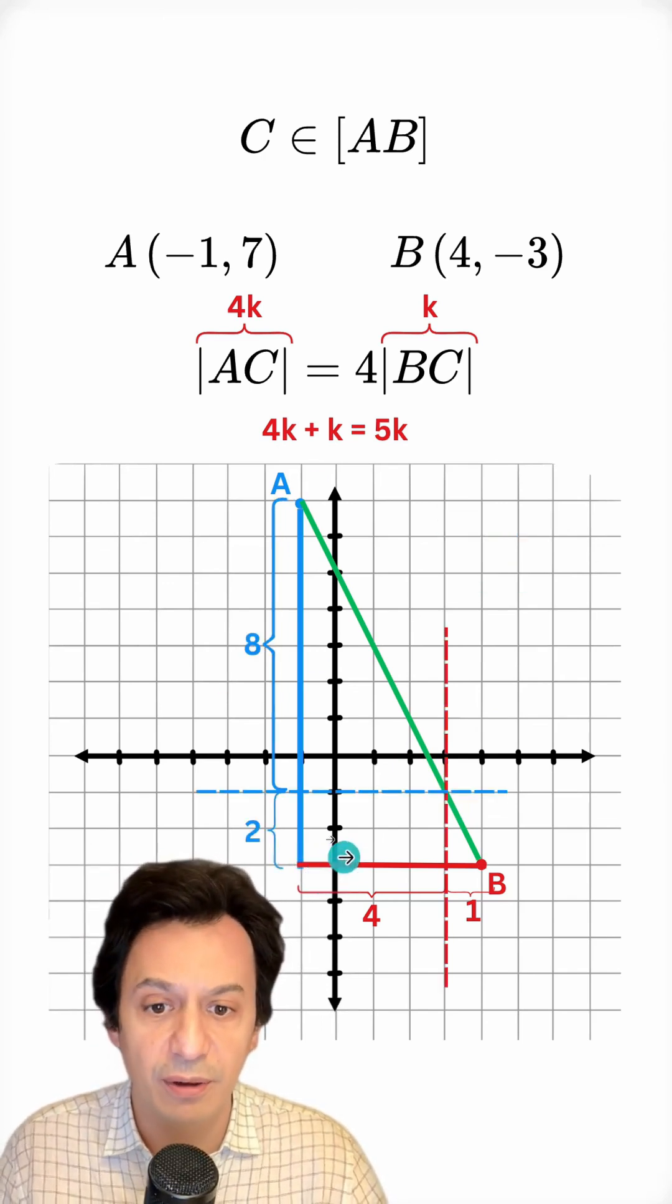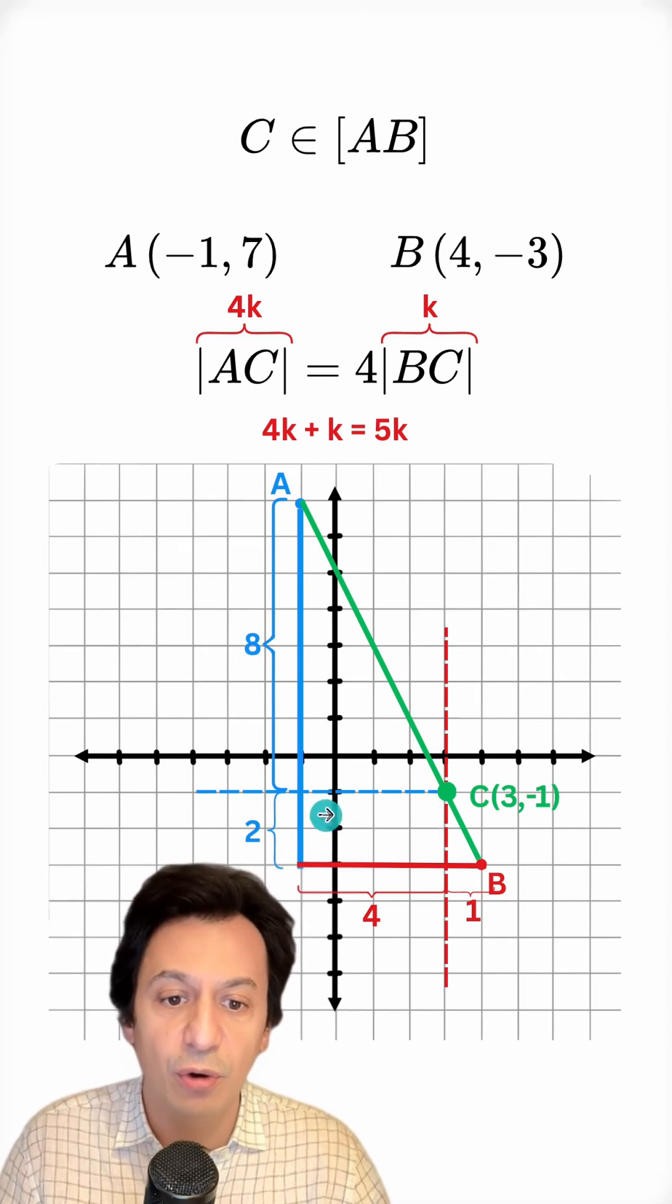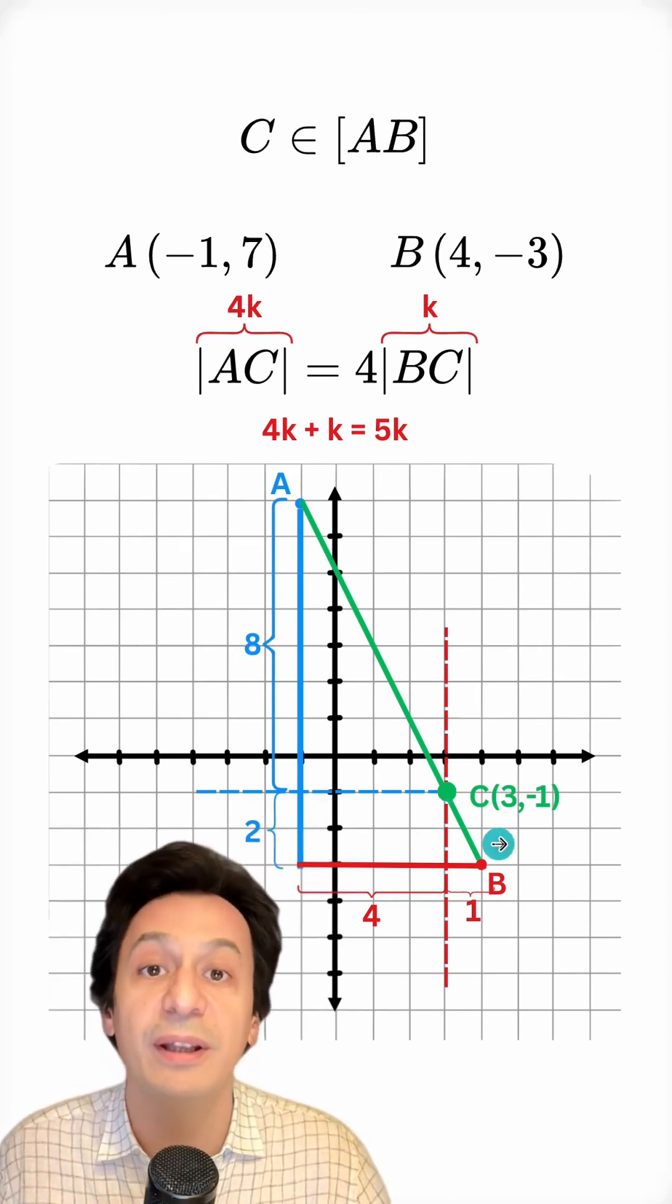Let's draw that as well. And look, the abscissa is 3 and the ordinate is minus 1. So we've identified the point.